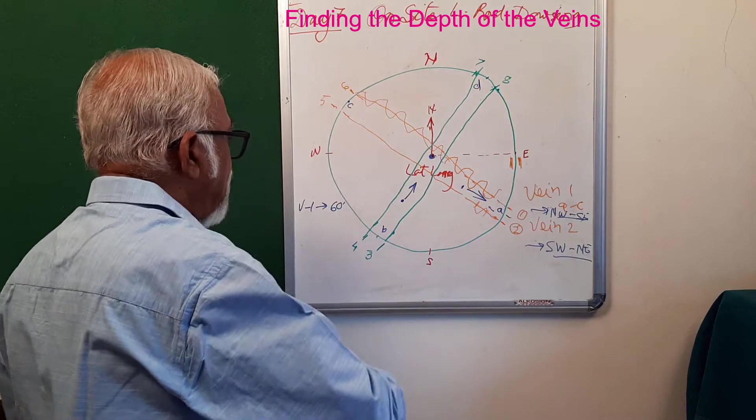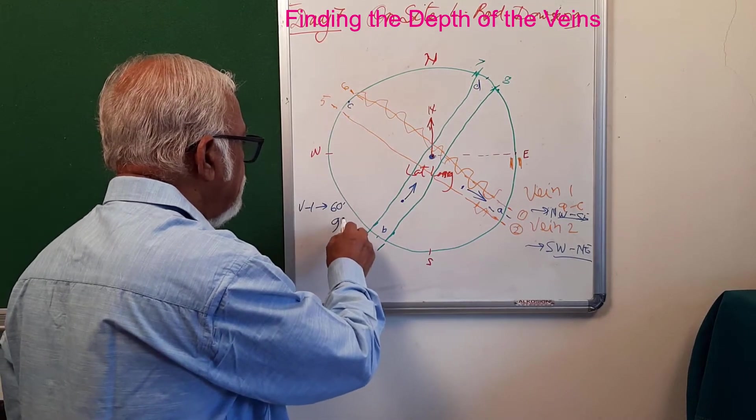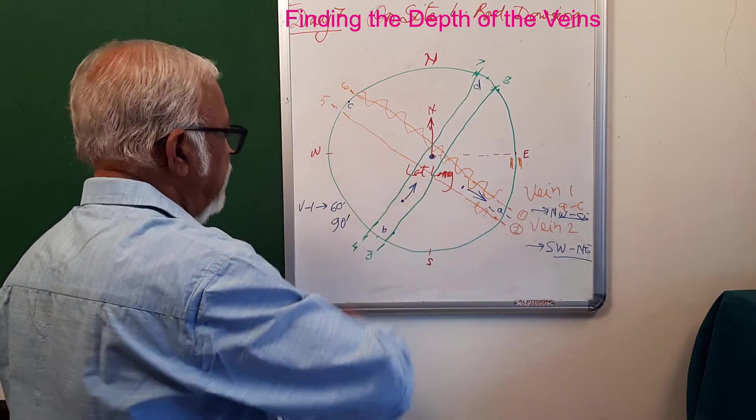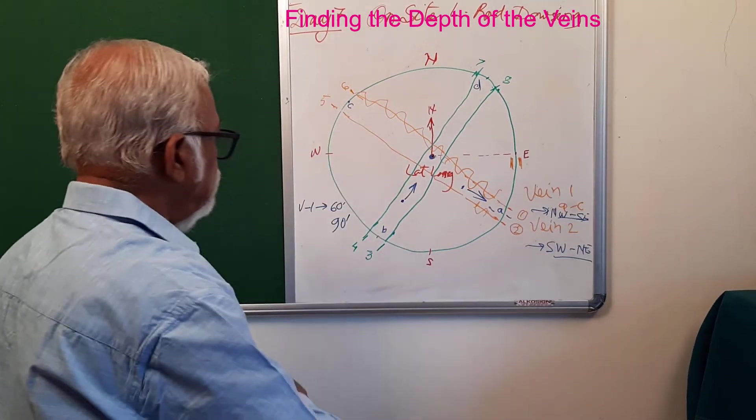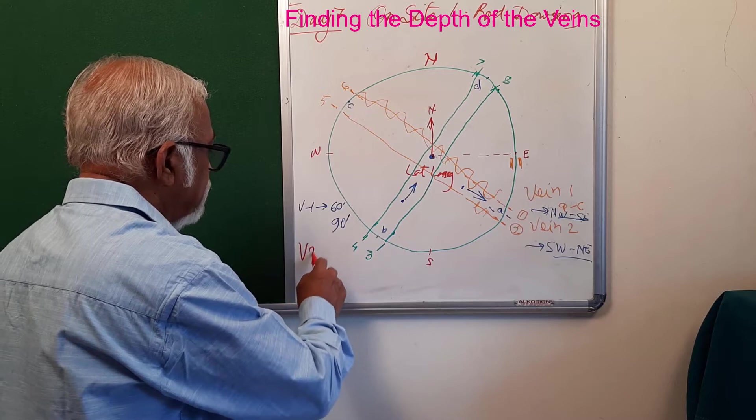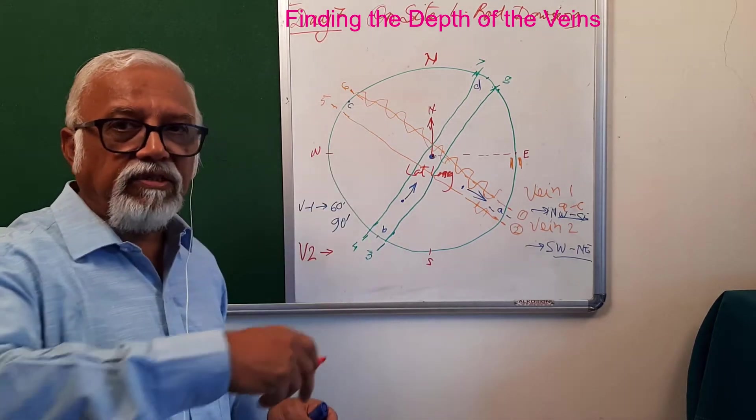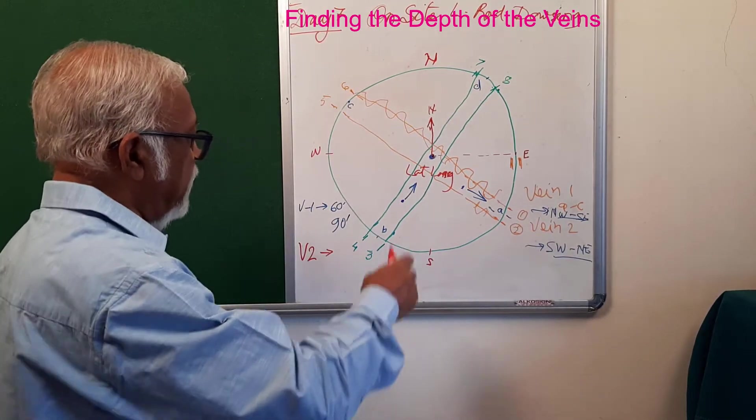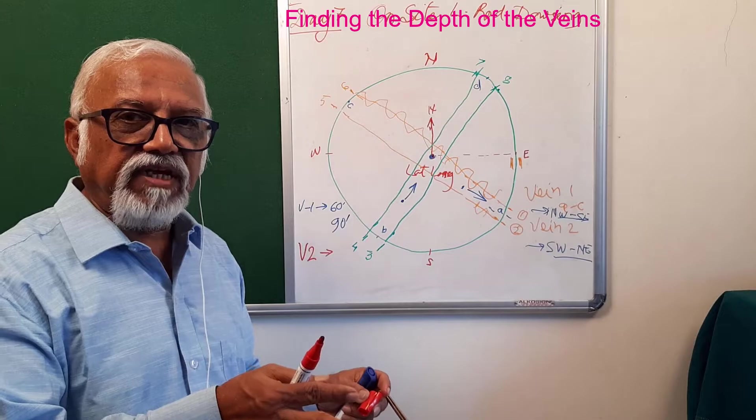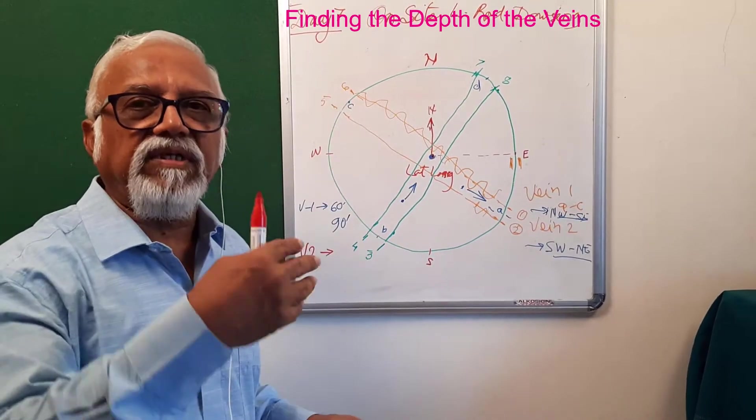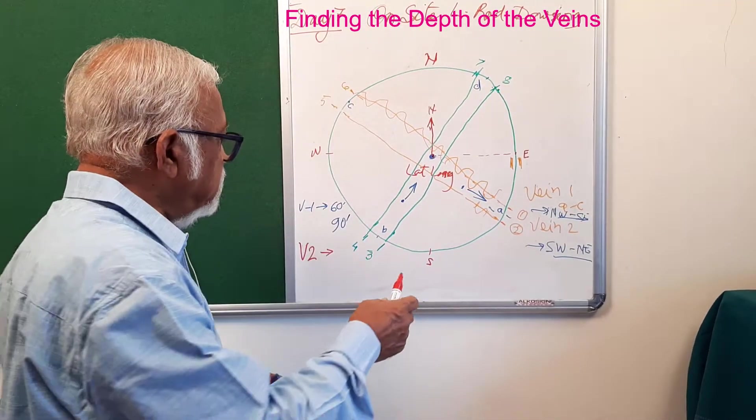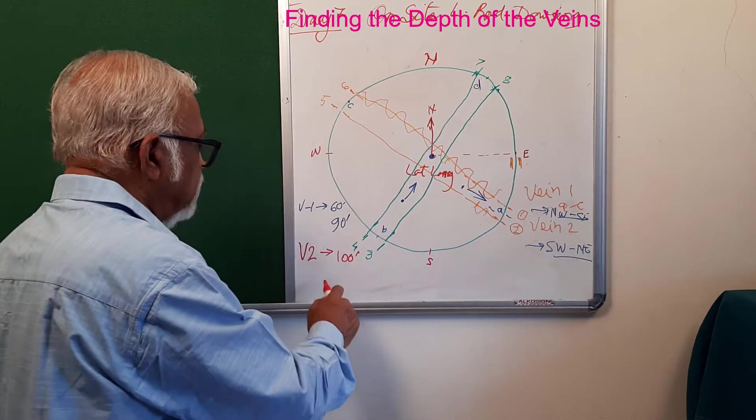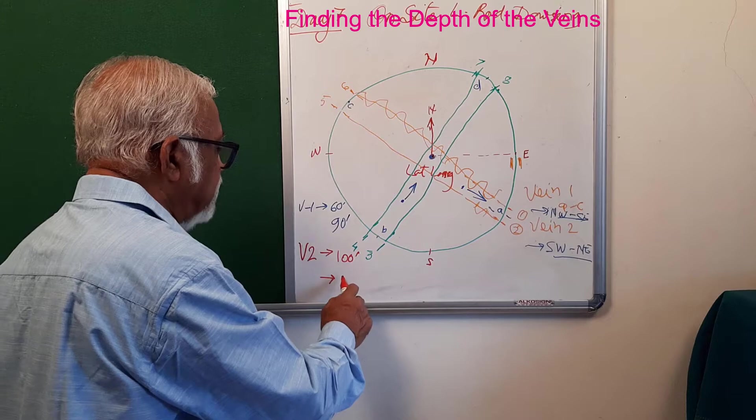On similar lines, I go to vein two and start doing the same exercise. There I get the first deflection at say 100 feet, and the second deflection is at 140 feet.